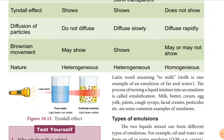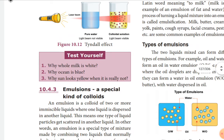The word emulsion comes from the Latin word meaning 'to milk', and milk is one example of an emulsion. Emulsion is a special kind of colloid — it means the dispersion of tiny droplets of one liquid in another liquid.